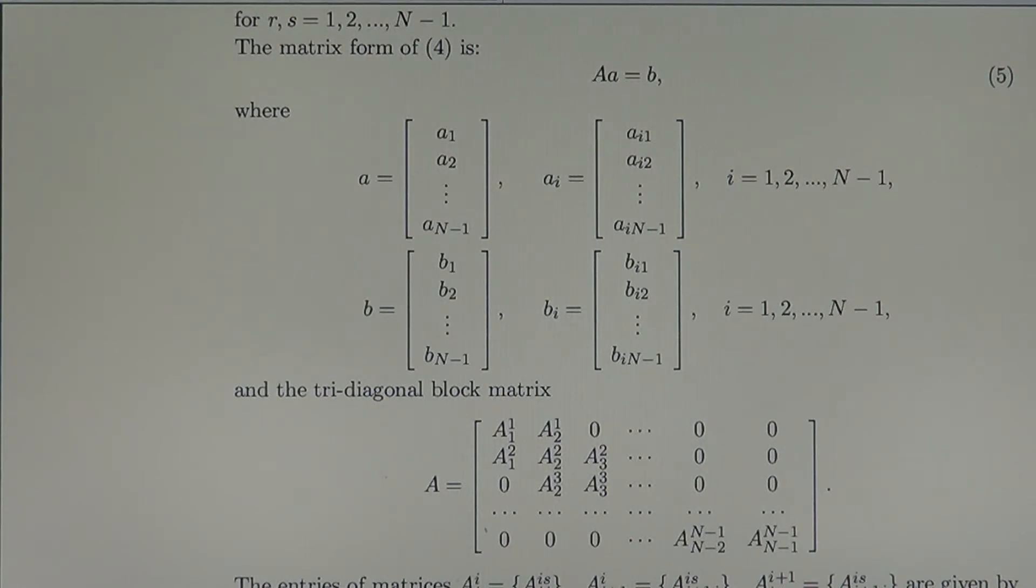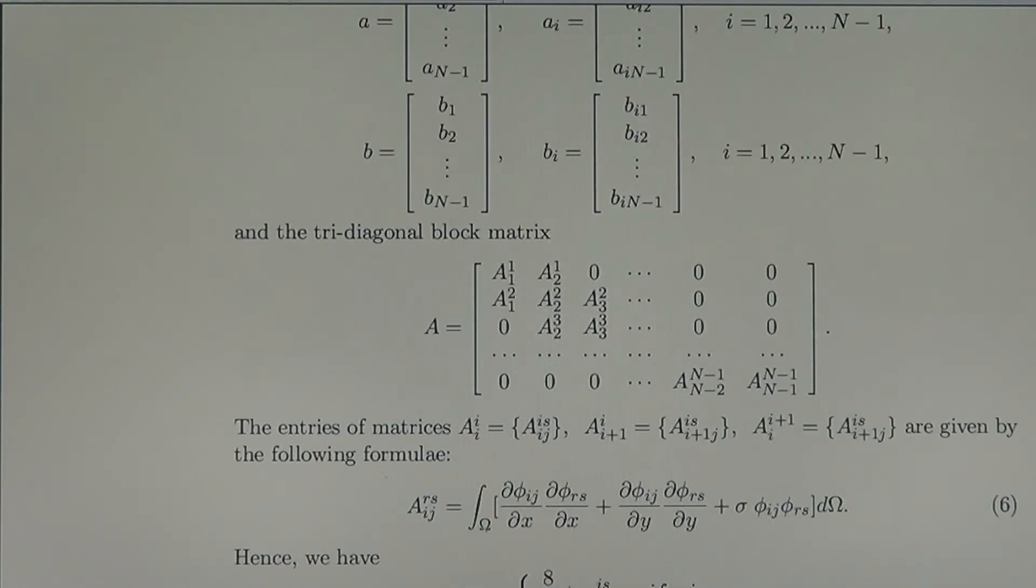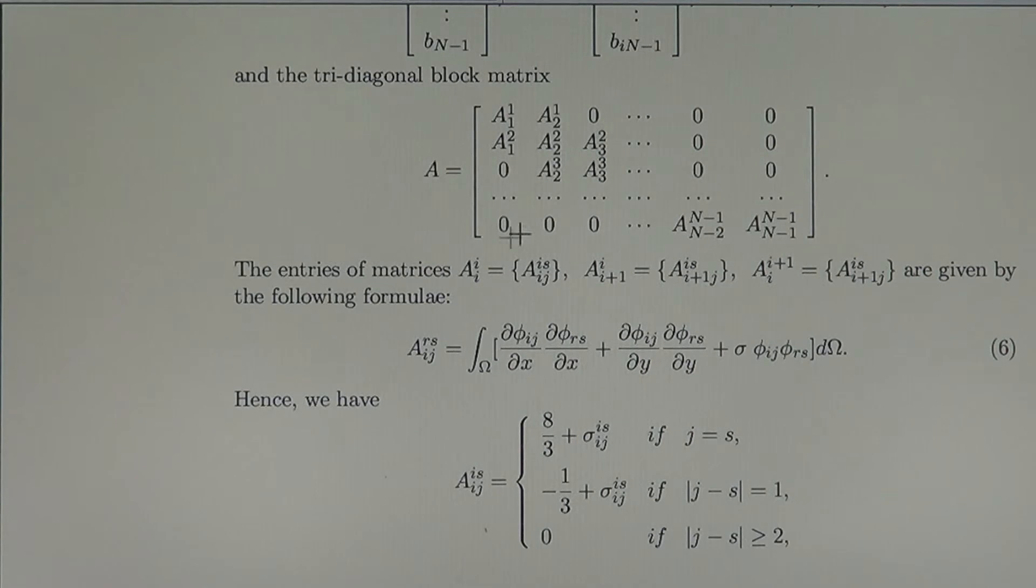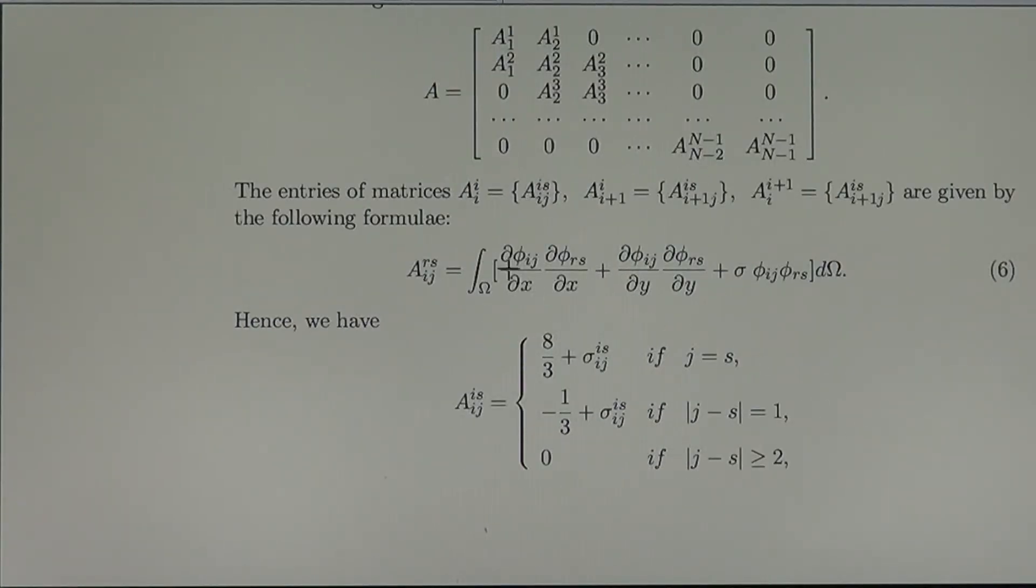The matrix A is a three-diagonal block matrix, so on the diagonal we have block matrices clarified just below. This is the structure of the matrix. It is a sparse matrix. The entries of the matrix are given by the following formula.